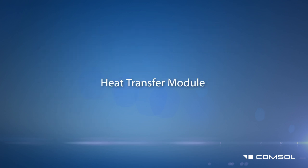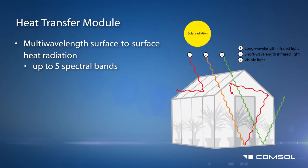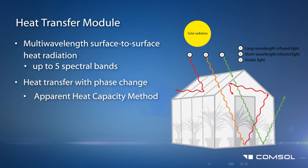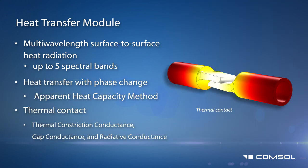Feature additions to the Heat Transfer module include the ability to simulate multi-wavelength surface-to-surface heat radiation, like the greenhouse effect for instance. Also added is a feature to increase the ease of use for modeling phase change and thermal contact, where the conductance can be varied according to contact pressure and surface properties.